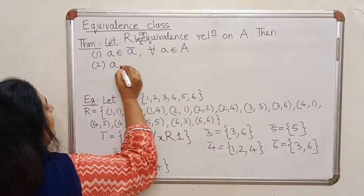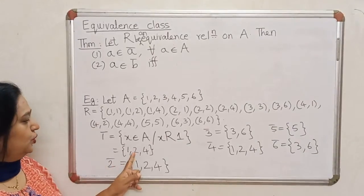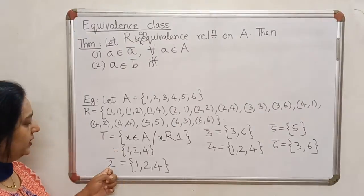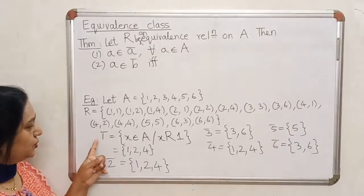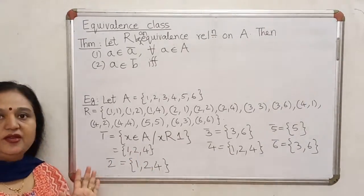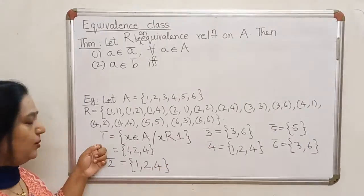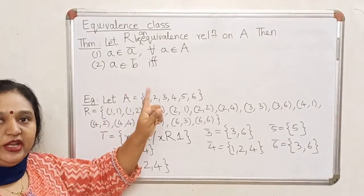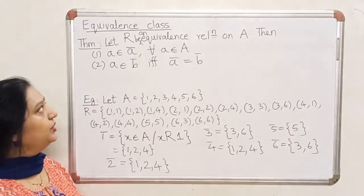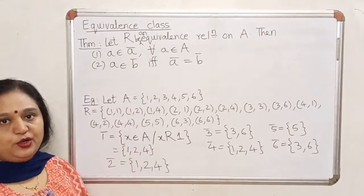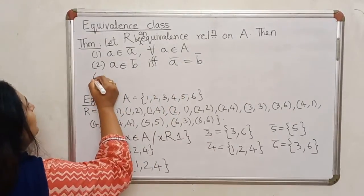The second property: an element a belongs to the equivalence class of b if and only if ā = b̄. You can verify this from the example: 2 belongs to the equivalence class of 1, and indeed the equivalence class of 2 equals the equivalence class of 1. Similarly for 4. But 3 does not belong to the equivalence class of 1, and their equivalence classes differ. Intuitively, a belonging to b̄ means a is related to b, and if a is related to b, the family of a should equal the family of b.